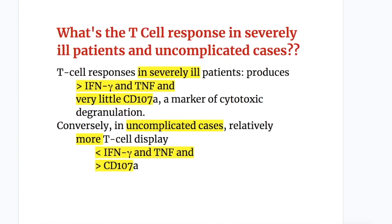Regarding T cell responses in severely ill versus uncomplicated cases: in severely ill patients, T cells produce more interferon gamma and TNF and very little CD107A, which is a marker of cytotoxic degranulation. Conversely, in uncomplicated cases, relatively more T cells display less interferon gamma and TNF and more CD107A. So in severely ill cases, T cells produce more interferon gamma and TNF with very little CD107A, while in uncomplicated cases they produce less interferon gamma and TNF but an increased amount of CD107A.